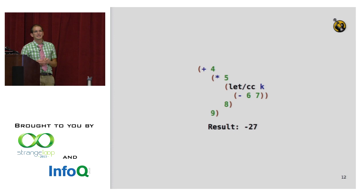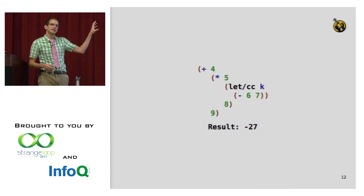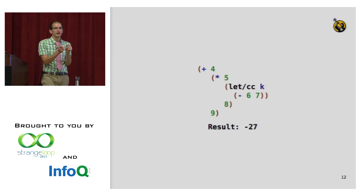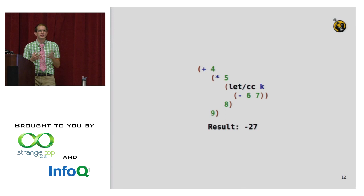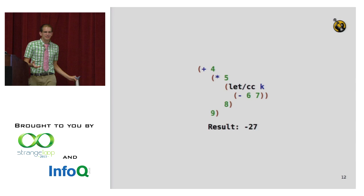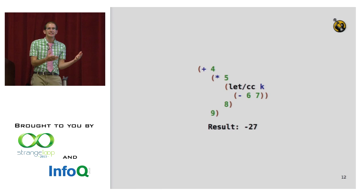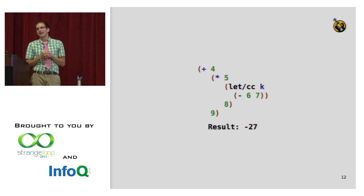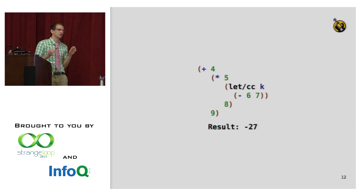In a language like Racket, that representation can be done automatically through a function called let-cc. What let-cc does is it takes the place of that box I had before. let-cc k says: name the continuation — that function I showed you — name it k. We name it k because of tradition: there's a famous formalism called the CESK machine, where k stands for continuation and c stands for code. Since c was already taken, we use k.